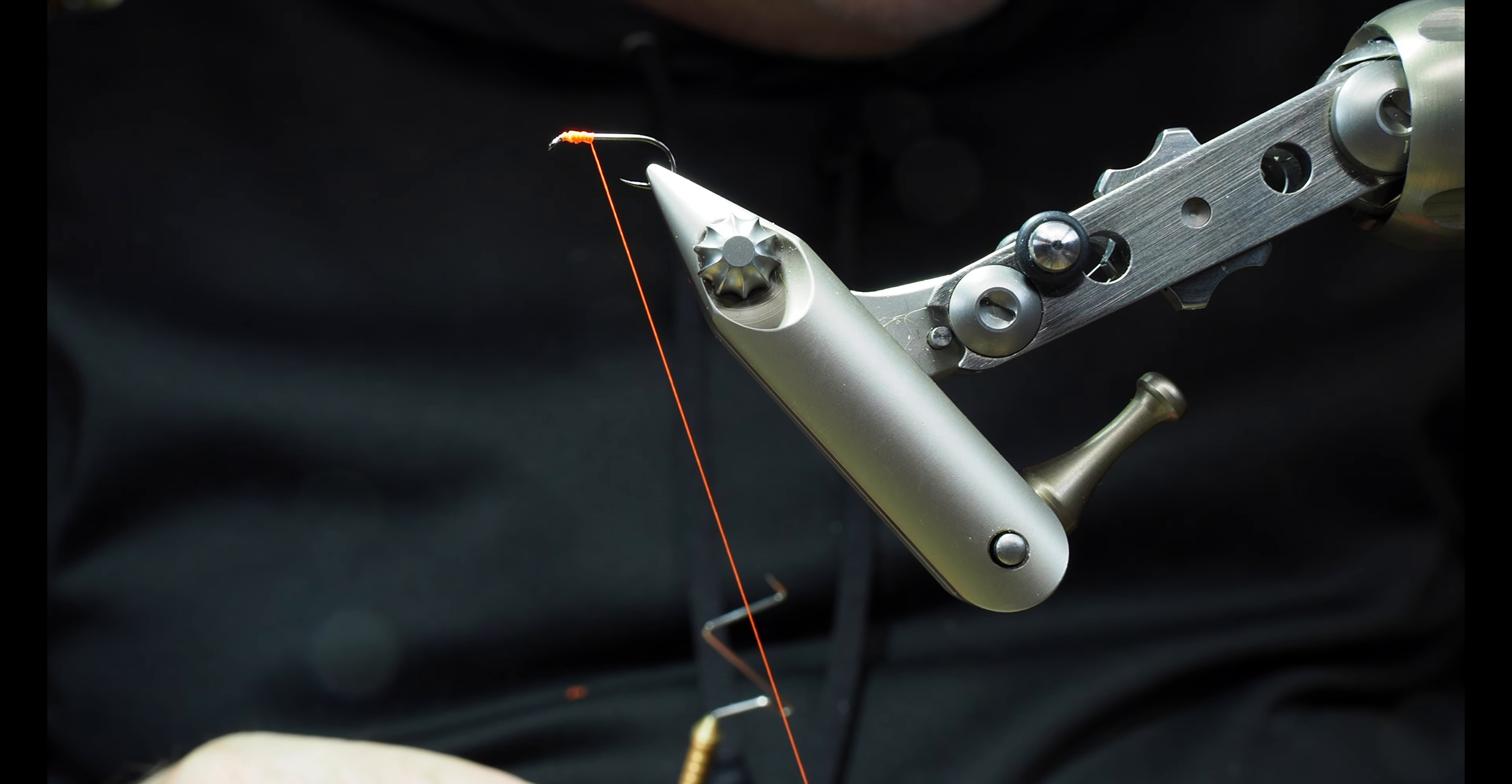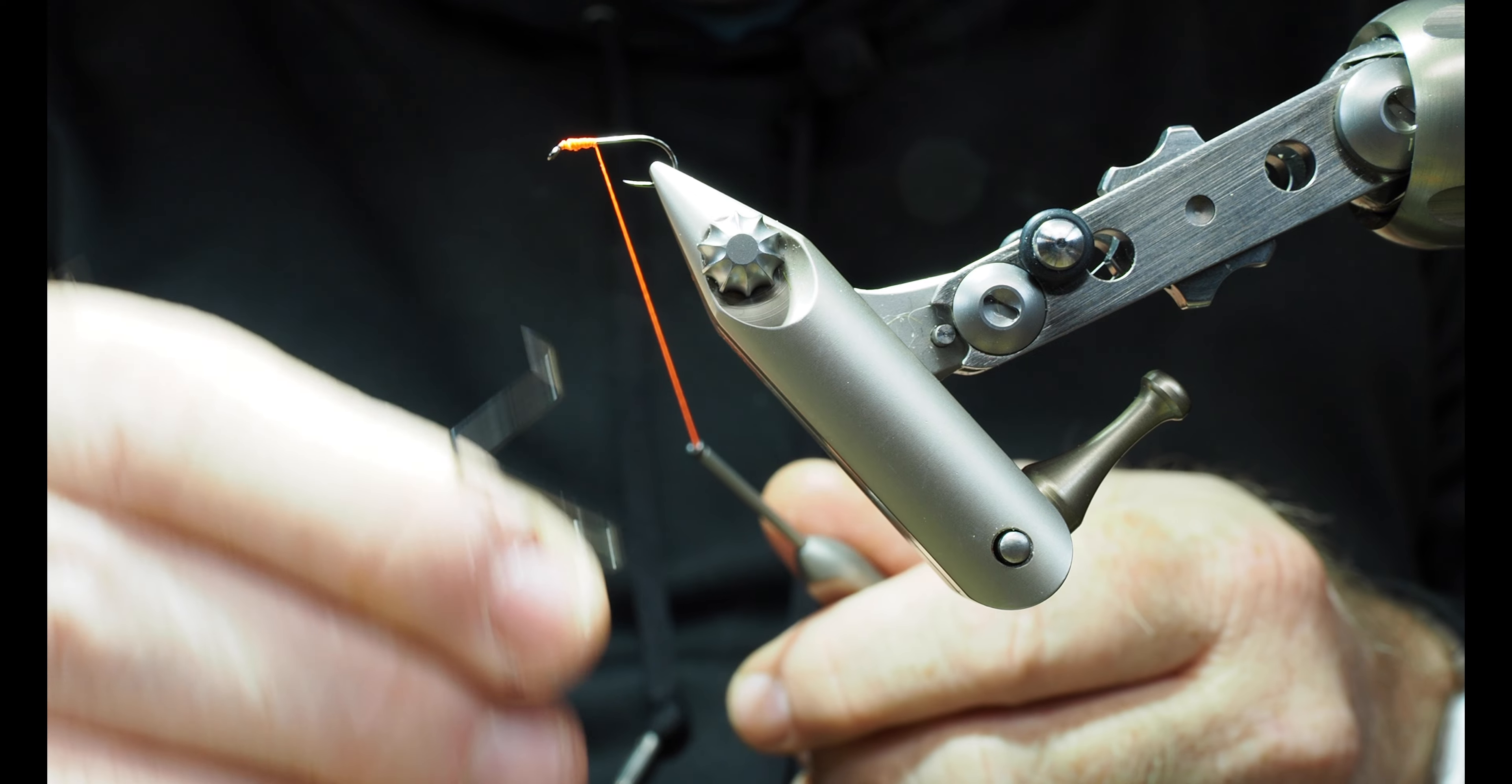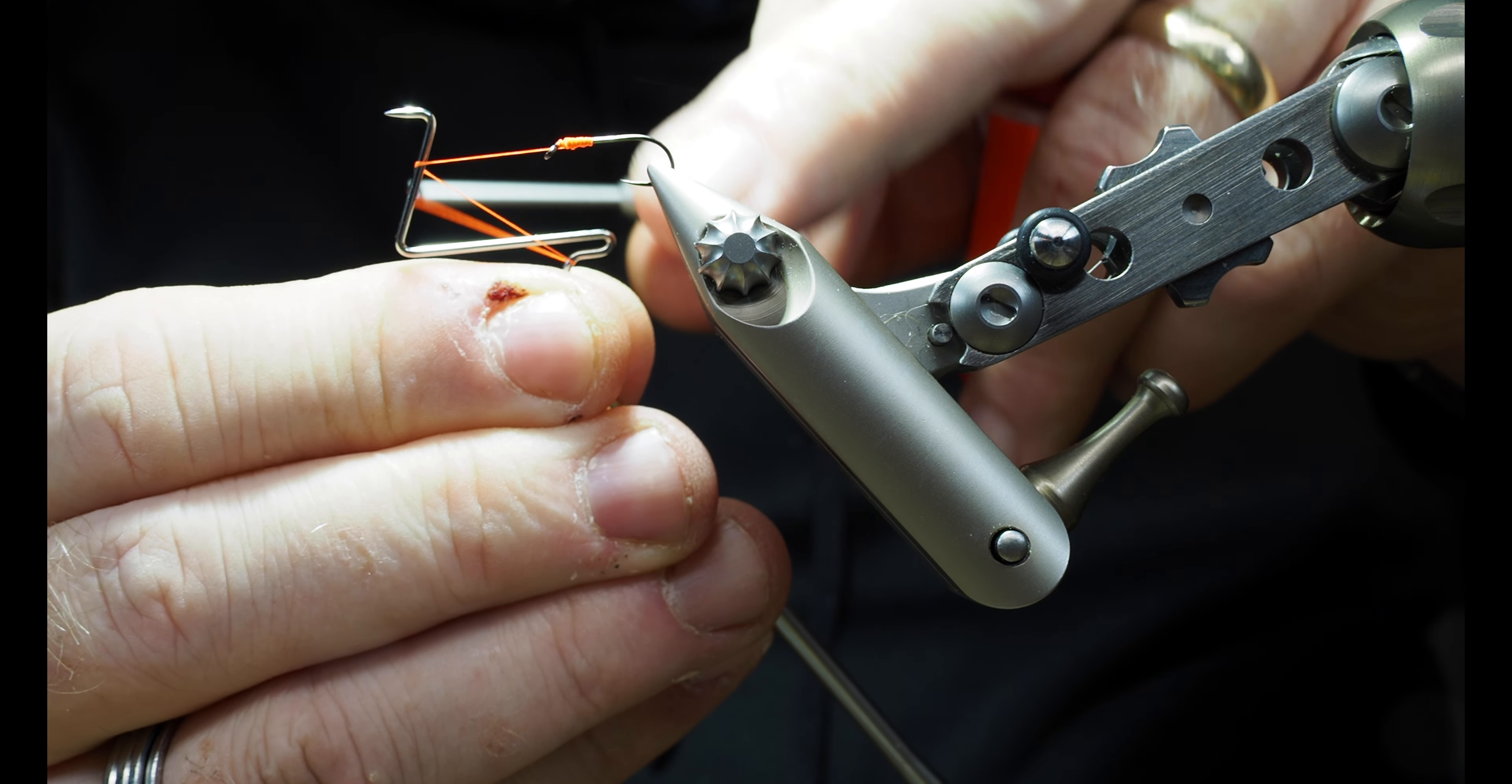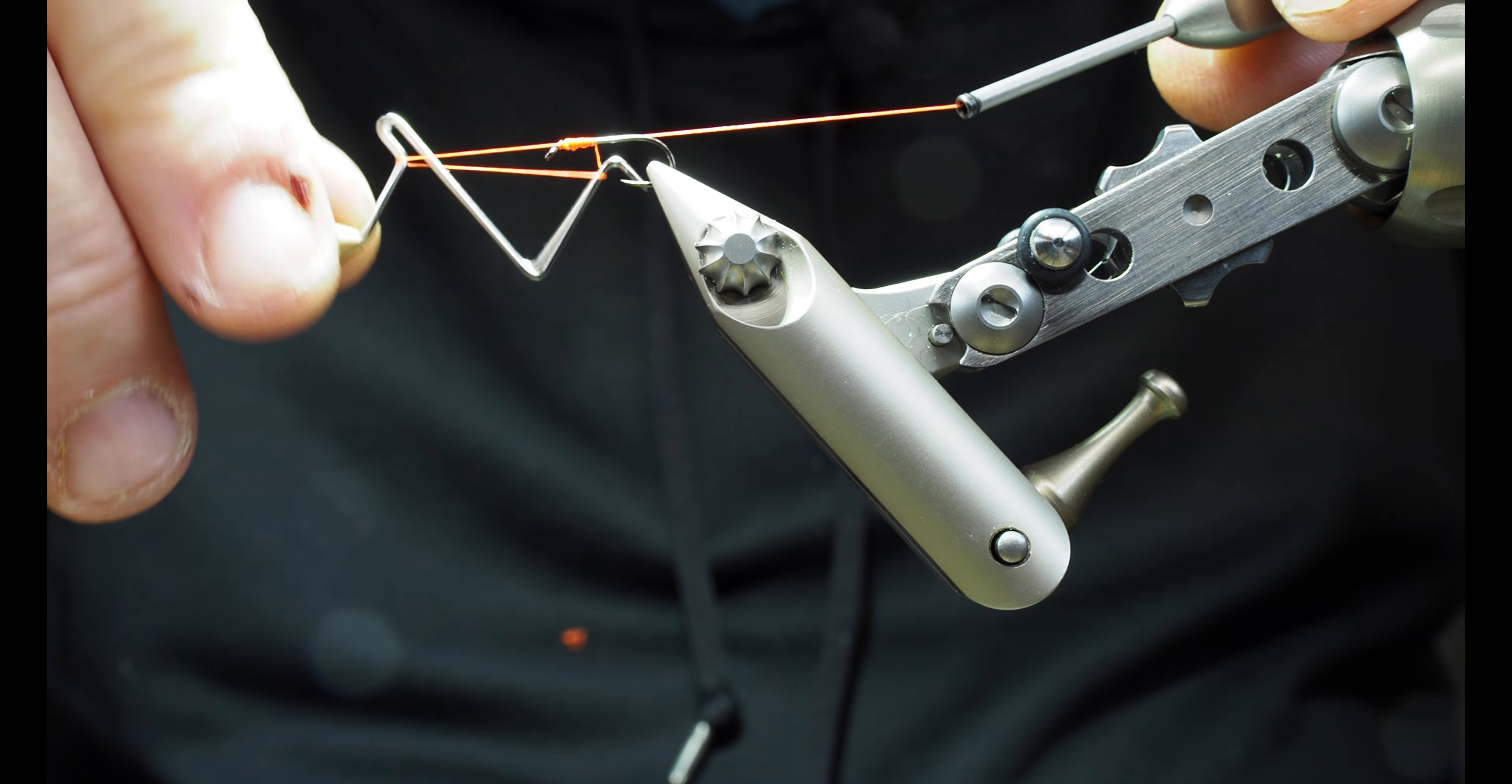Now I'm going to show you how to use the smaller whip finisher. It's going to be just the same as what we just did with the larger one. So we're going to hook our thread with that hook on the top. I'm going to bring the thread back and into this notch and back. So I've got it right in position now.